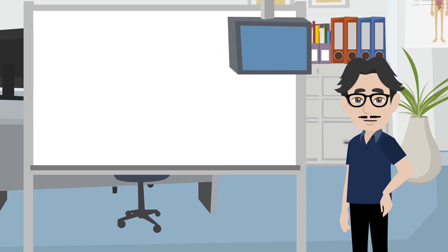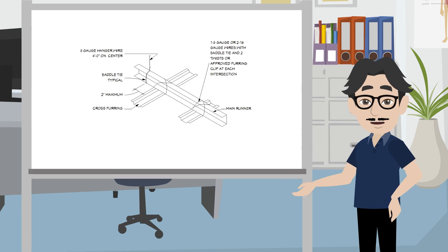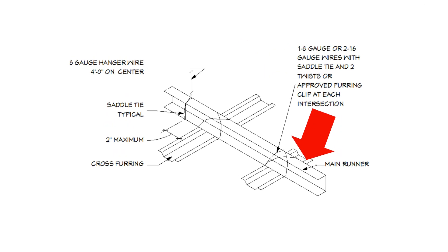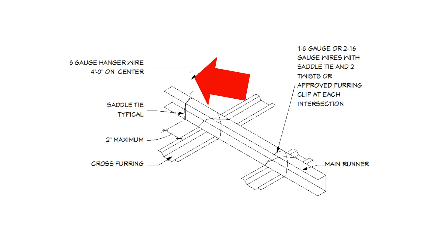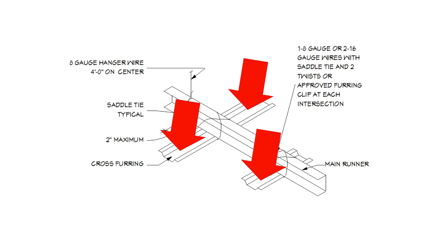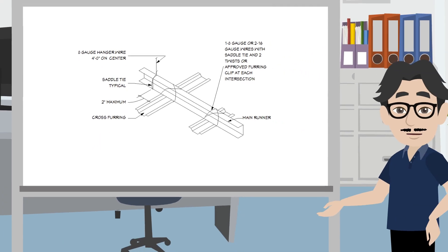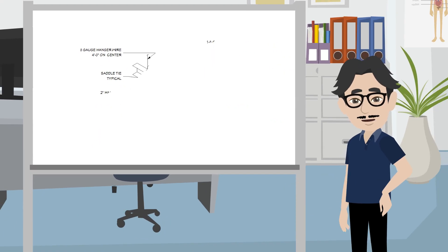Gypsum wall boards can be installed on a suspended ceiling system. This is usually achieved by suspending light gauge steel C-channels, typically 1 and 1/2 inch, on wires or rods. Hat channels are then fastened to these C-channels. The hat channels, sometimes called furring channels, are typically 1 and 1/2 inch or 7/8 of an inch. Then the gypsum wall boards can be screwed to the hat channels. After that, the wall boards just need to be textured and painted for a finished product.